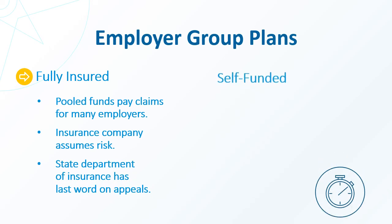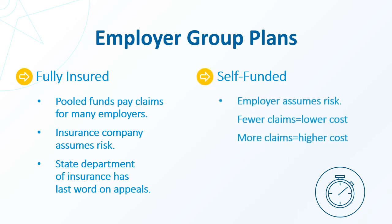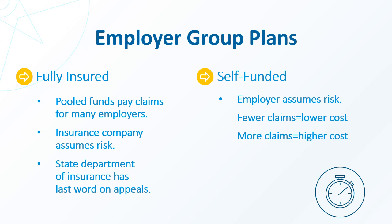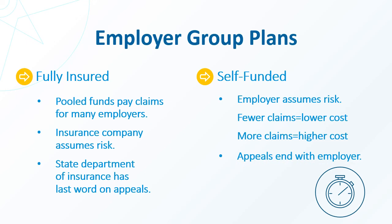In a self-funded plan, the employer, not the insurance company, pays most or all of the costs or claims. The fewer claims, the less paid out by the employer, and vice versa. As a result, employers have more control over what is covered and what is denied and typically have the last word on appeals. Check with your HR department or your plan's member services to find out if your health plan is fully insured or self-funded if you need to file an appeal.